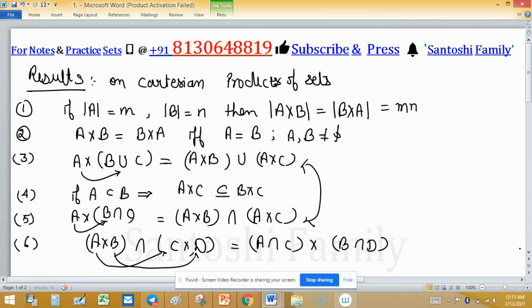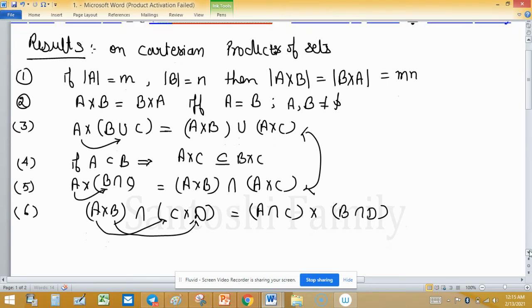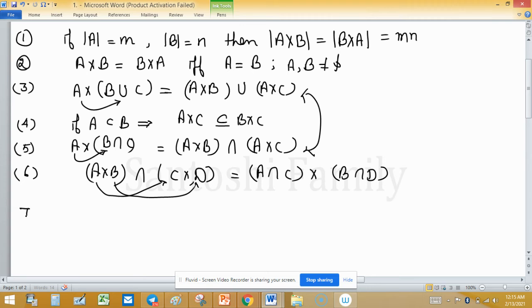Property 7, or result 7, is: if cardinality of A intersection B is m, then cardinality of A cross B intersection B cross A will equal to m squared.